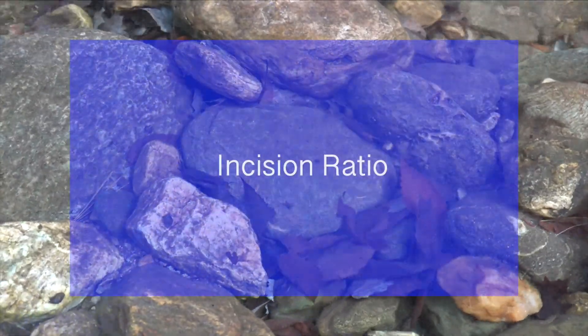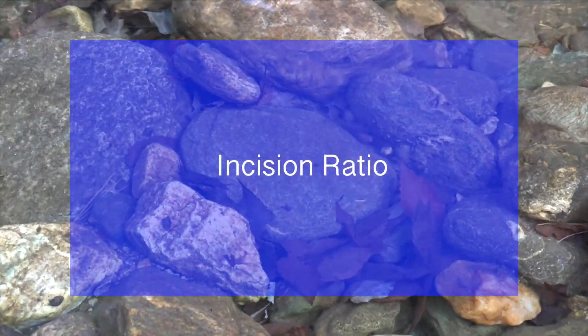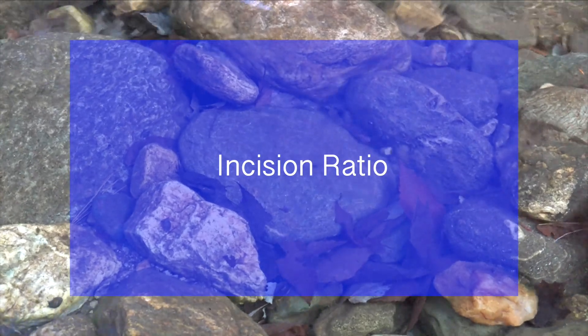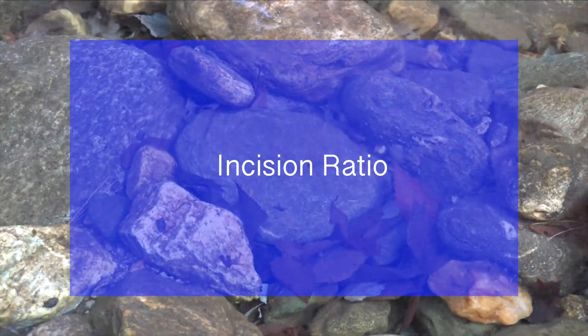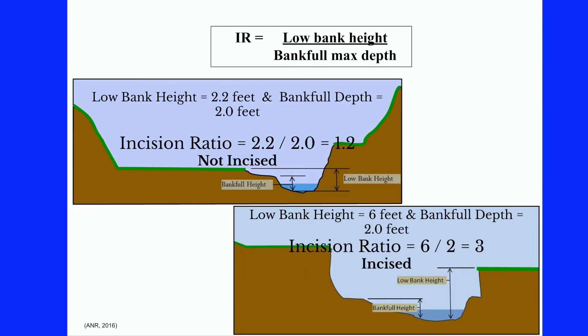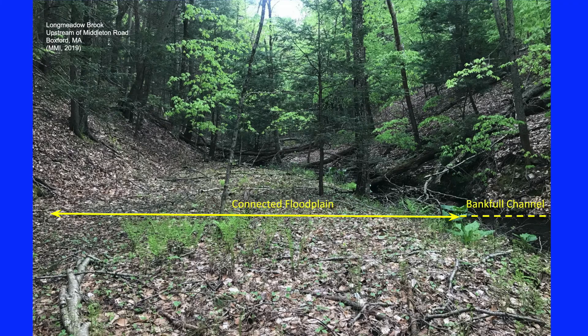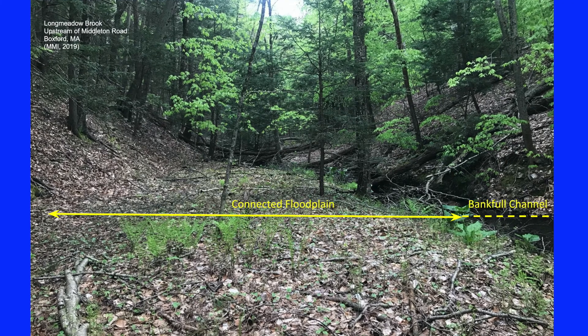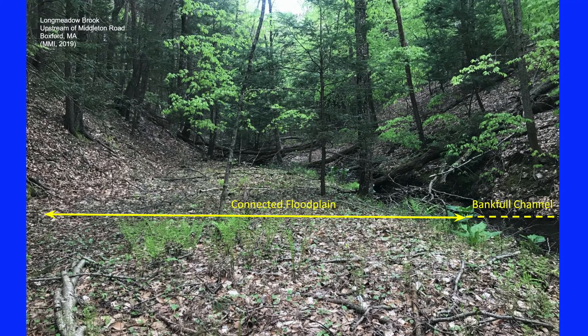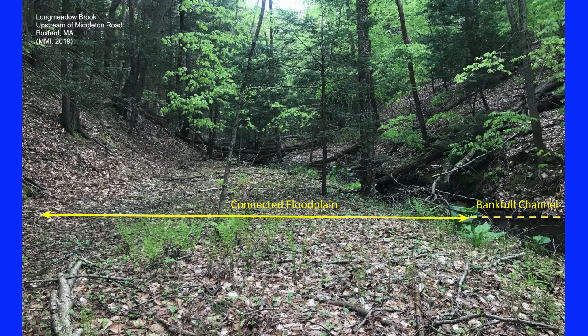The incision ratio is an indicator of how vertically connected your channel is to the floodplain. It is defined by the low bank height of the channel divided by the maximum bankful depth. Low bank height is the first elevation at which the channel can spill out onto the floodplain, and you often measure this while doing your cross-section measurements. When a bankful flood occurs and the channel is connected, it has an incision ratio of 1, and water readily spills out onto the floodplain.